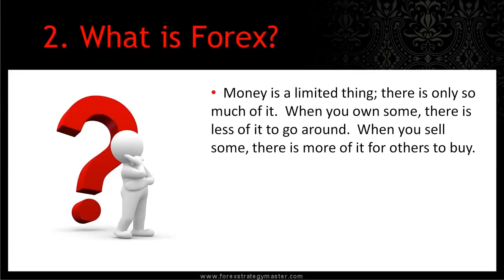Money is a limited thing — there's only so much of it. So when you own some, there is less of it to go around, and when you sell some, there is more of it for others to buy. This is a supply and demand model. As there is less of a currency to purchase because more people have bought it, the value of that currency will rise. If more people are selling a currency, so there's more of it around to purchase, the value of that currency will drop.